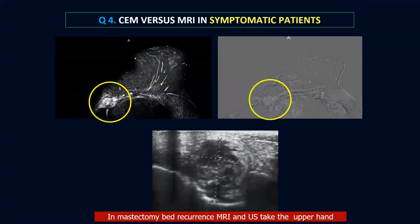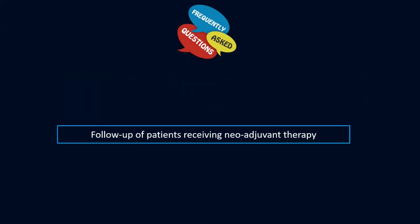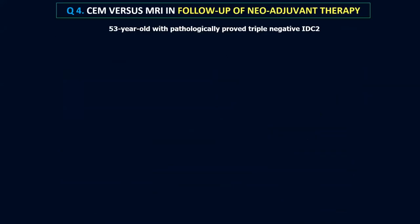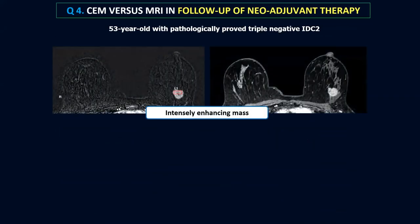When it comes to mastectomy beds, the two ways to identify operative bed recurrence are MRI — which identifies the relation of recurrence with the chest wall, as the malignant mass will first infiltrate the chest wall with no breast tissue remaining — and ultrasound, which is also very beneficial. Now, moving to the last part of the lecture: post-neoadjuvant therapy. A 53-year-old female with pathologically proven triple negative invasive breast cancer: the gold standard for following up patients receiving neoadjuvant chemotherapy is MRI, but according to several studies — some performed in our hospital — we have proved that contrast mammography is equivalent in most cases to MRI, and easier and much cheaper to use.